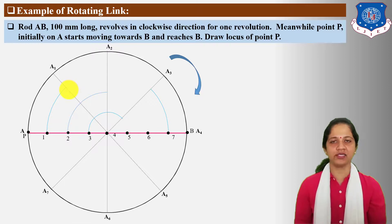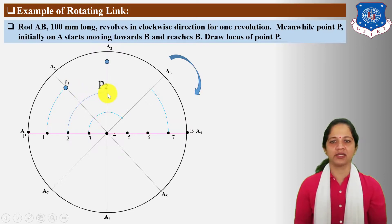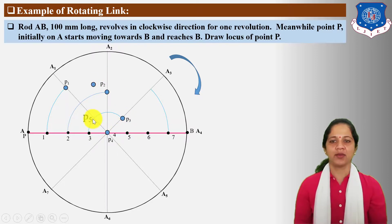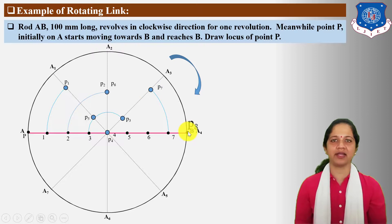Next, locate locus points on each particular position of AB road. Locate P1 locus point, P2 locus point, P3 locus point, P4 locus point, P5 locus point, P6 locus point, P7 locus point, and at last locate P8 locus point.